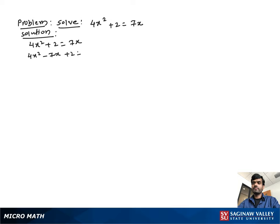We get 4x squared minus 7x plus 2 equal to 7x minus 7x. Then we get 4x squared minus 7x plus 2 equal to 0.